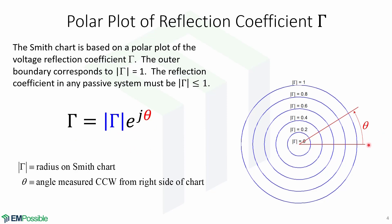Theta is the angle measured counterclockwise from the right side of the chart, and the magnitude of gamma is the radius of the various circles of constant reflection coefficient, as shown here.